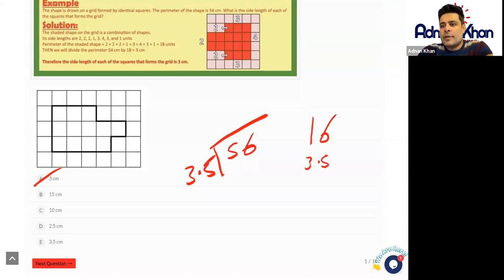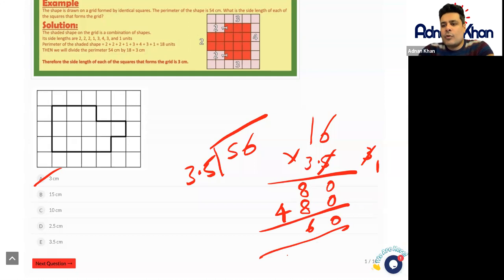Times by 3.5, let's see if that gives us the answer. 5 times 6 is 30, 3 is carried forward. 5 times 1 is 5, add 3 is 8. Put another zero underneath. 3 times 6 is 18, it goes there, 1 is carried forward. 3 times 1 is 3, and add the 1 there as 4. Let's add these up: 8 and 8 is 16, 1 is carried forward, and 4 and 1 is 5. And because the decimal place is here on the left once, we'll put the decimal place on the left here, and that gives us 56. So 3.5 goes into 56, 16 times. So that means that one of these sides is 3.5 centimeters.